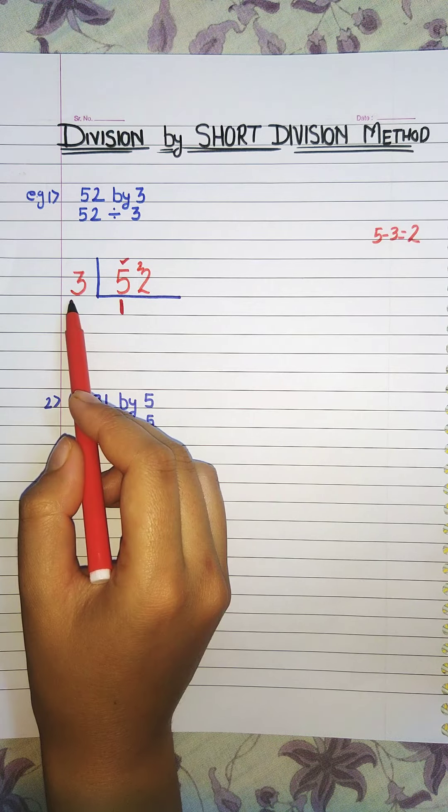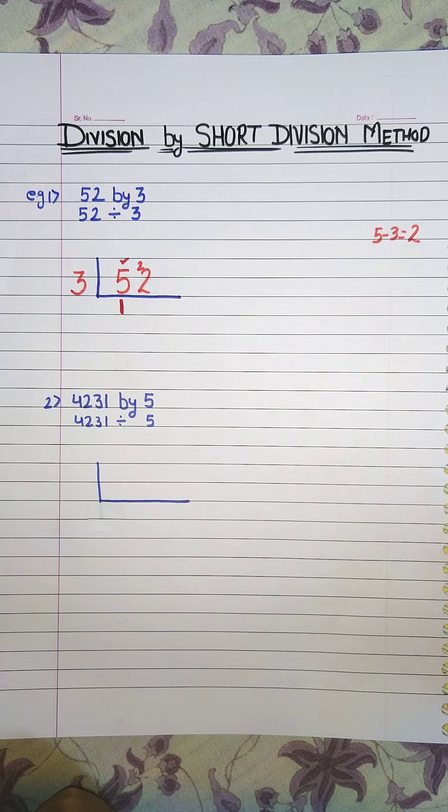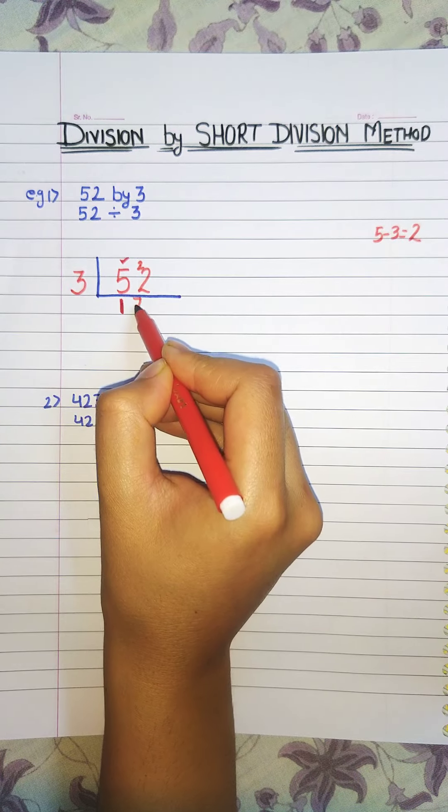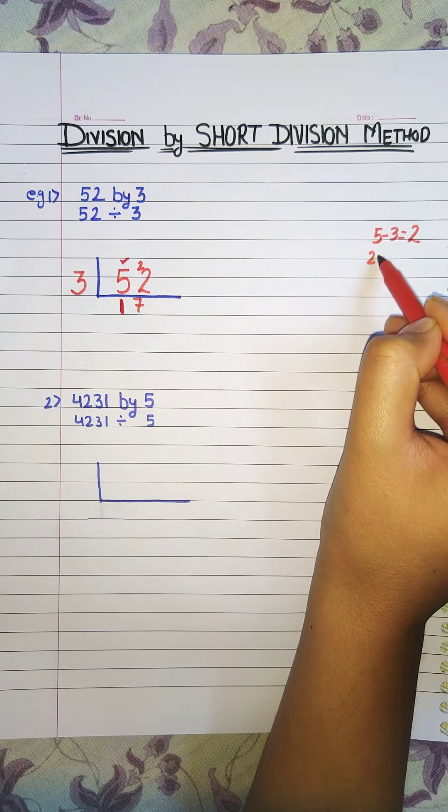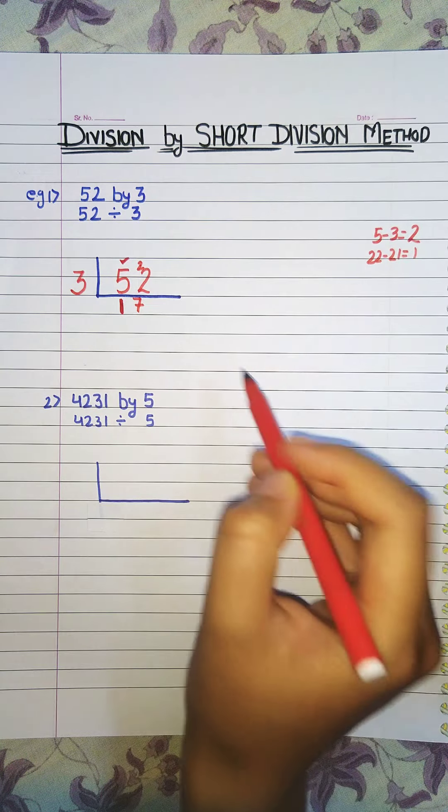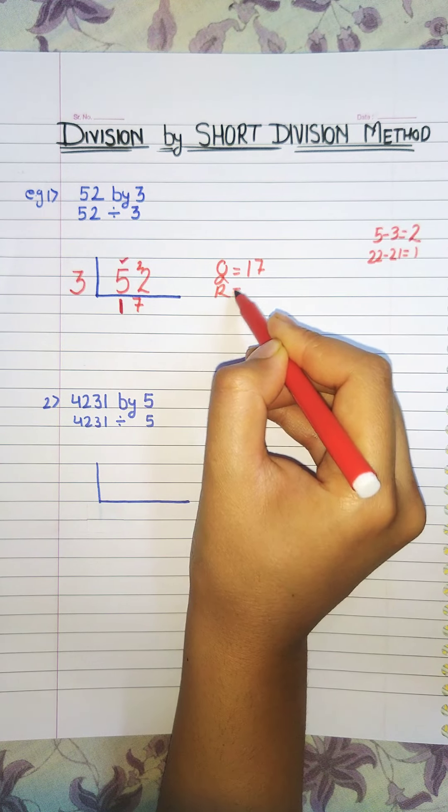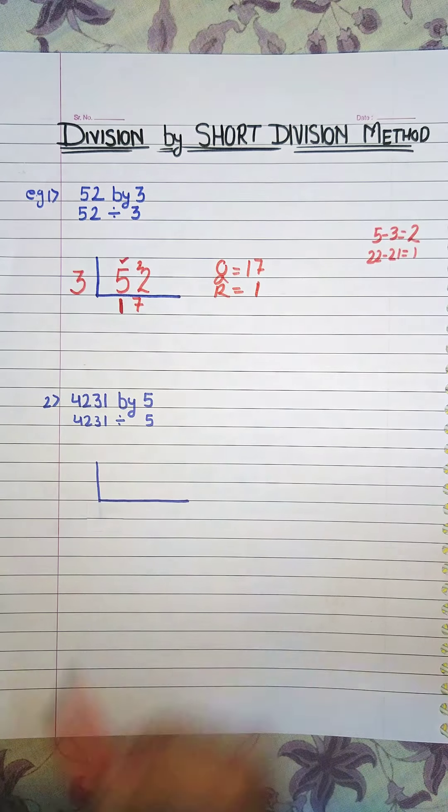Now again recite the table till we reach 22. So 3 sevens are 21. In the mind you will do 22 minus 21 that is 1. So quotient is 17 and we have remainder 1.